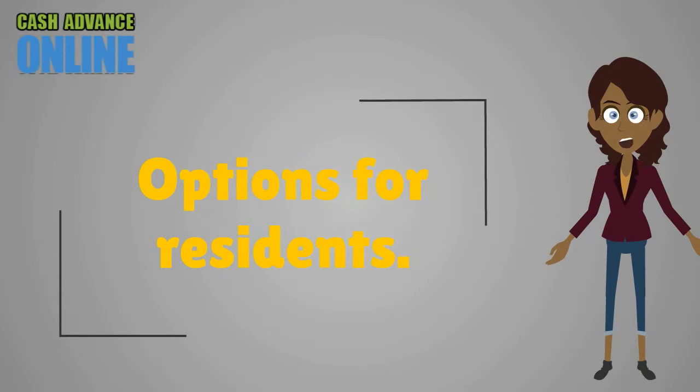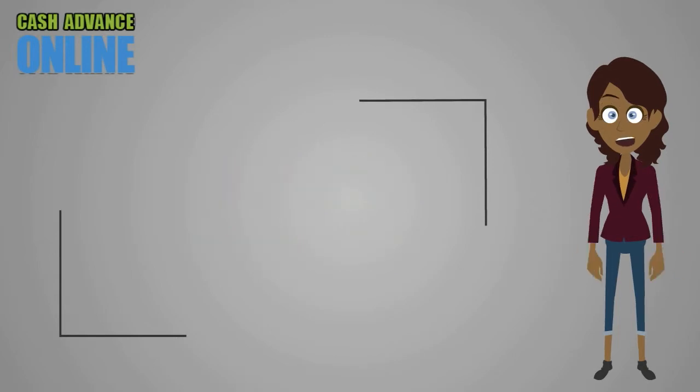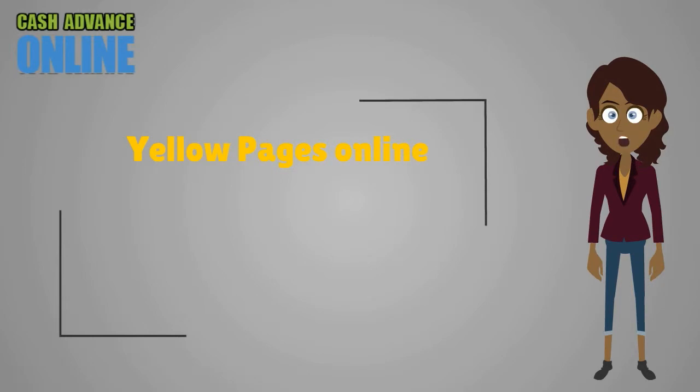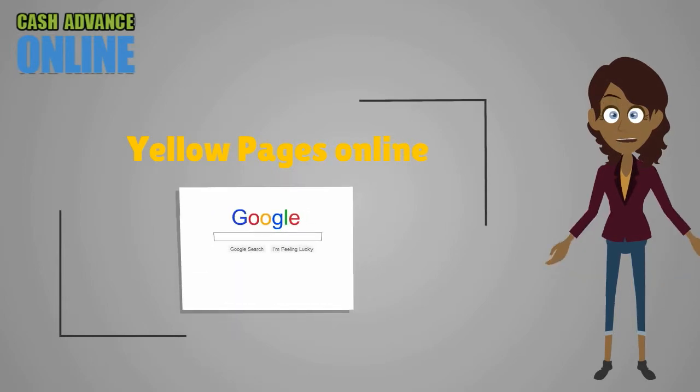Options for Residence. Consumers wishing to apply for cash advances from storefront lenders within the state of California can visit the Yellow Pages Online website or search via Google to find a suitable company.